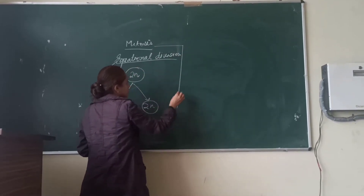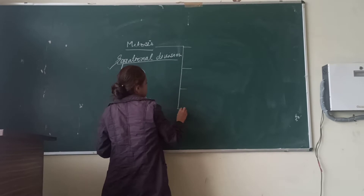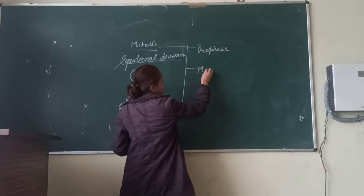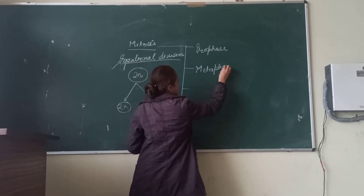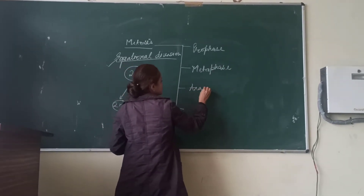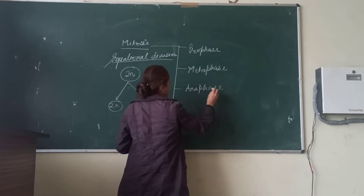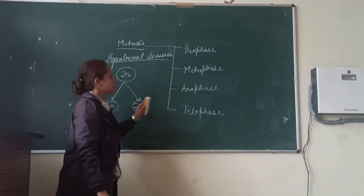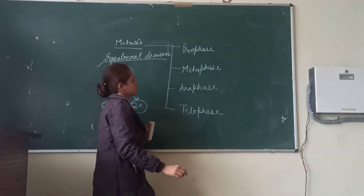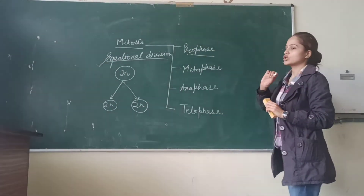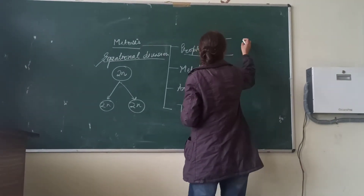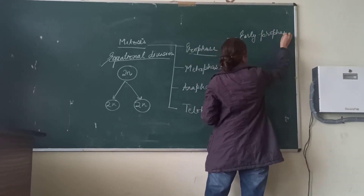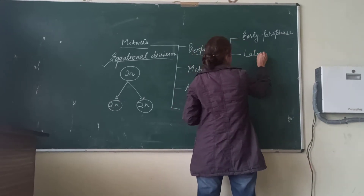Mitosis has four stages: prophase, metaphase, anaphase, and telophase. First of all, we will discuss prophase. Prophase also has two sub-stages: early prophase and late prophase.